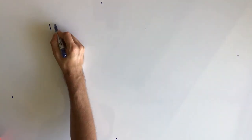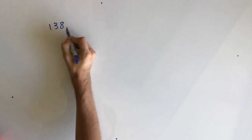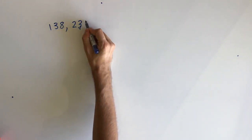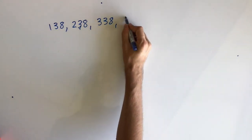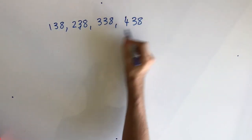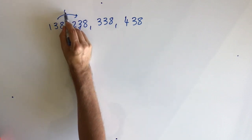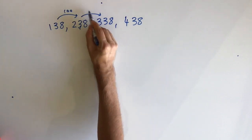This time I'm going to show some examples of counting in hundreds. And again, as I'm writing them down, see if you can guess what the next numbers are going to be, and maybe what the pattern is. 138, 238, 338, 438, and each time I've moved up 100.